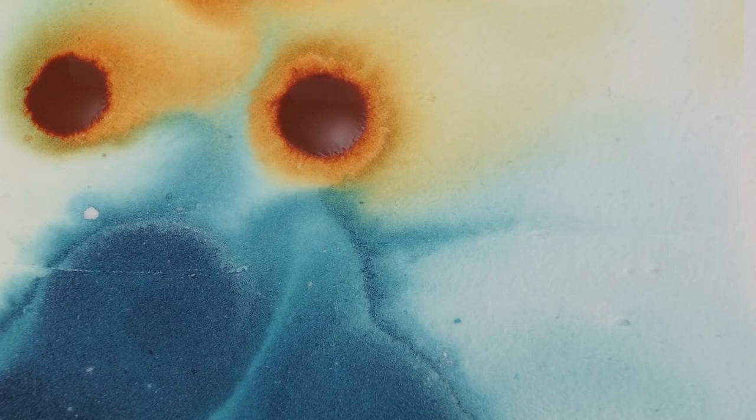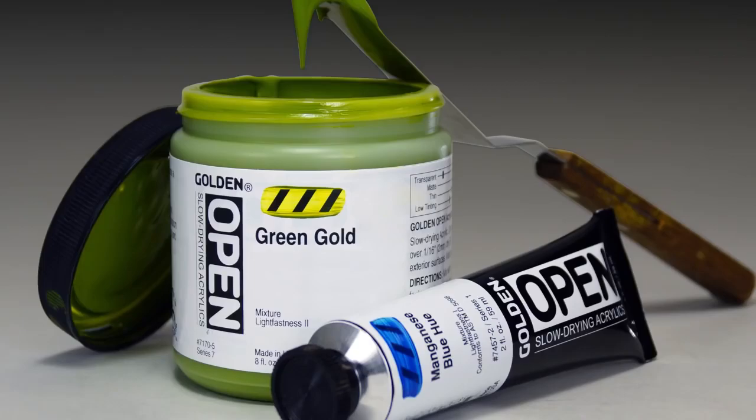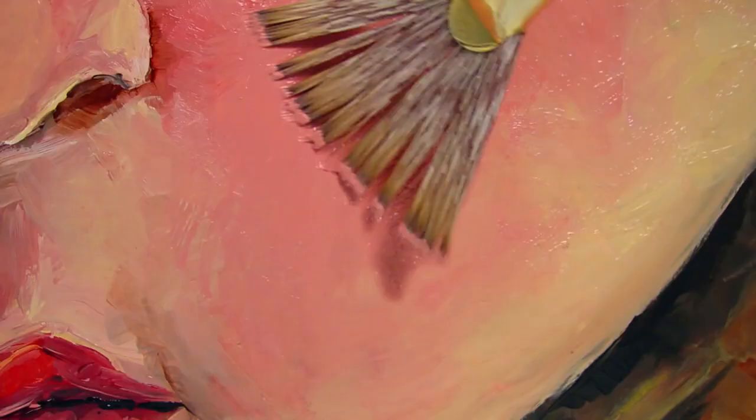Before we finish let's take a closer look at a product that is unique to Golden open slow drying acrylics. Open slow drying acrylics are unique because they remain wet for extended periods of time without skinning over which makes them a great choice for water-based printmaking. We'll use molding paste to make a nice smooth surface with low absorbency that works well as a printing plate and also as a surface for subtractive techniques.